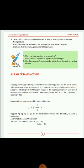Fourth point: an equilibrium state is attainable from either direction — starting from reactants or from products. Hydrogen and iodine can combine to produce hydrogen iodide, and alternatively hydrogen iodide can decompose to form hydrogen and iodine. An equilibrium state can be disturbed and again achieved under given conditions of concentration, pressure, and temperature.